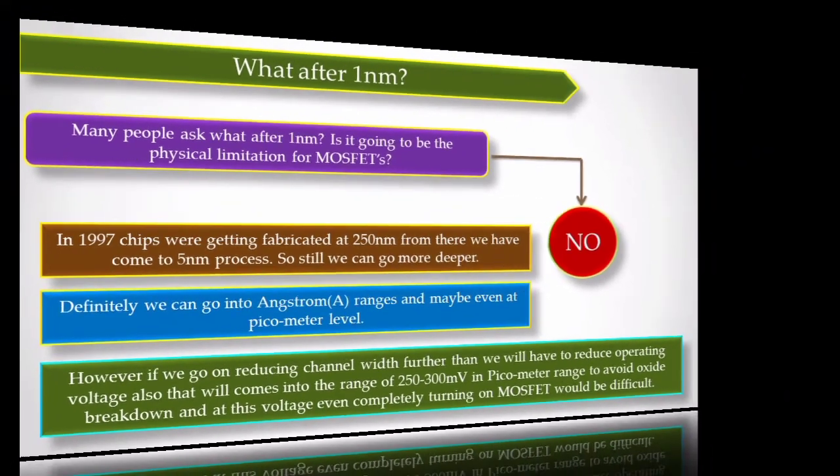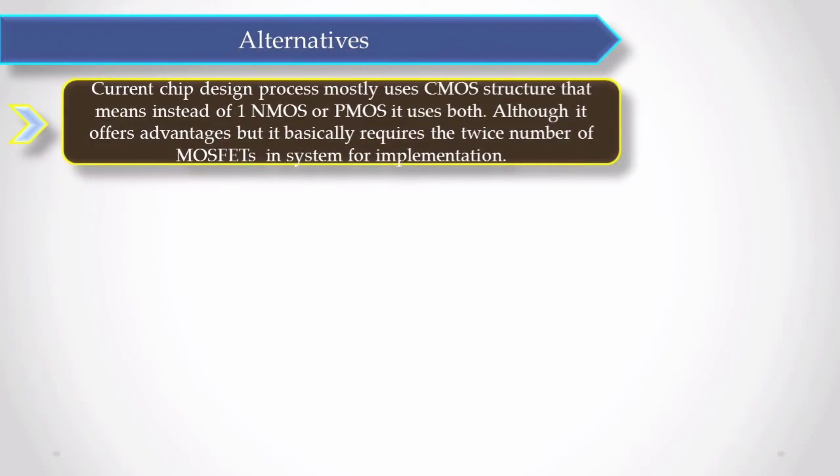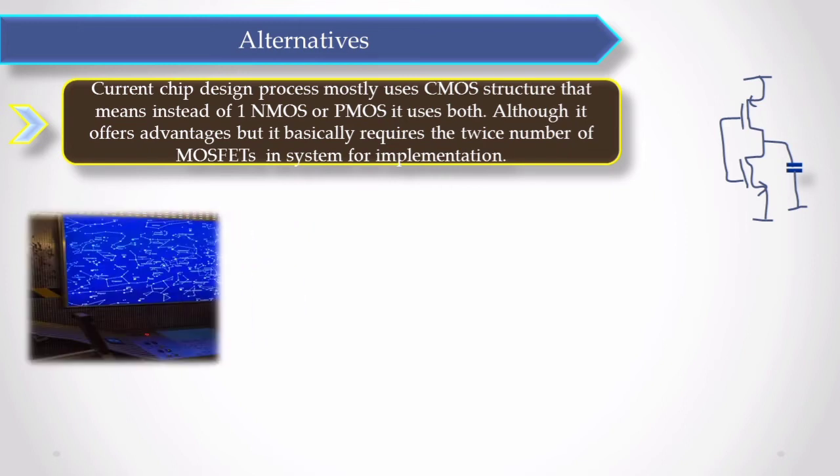The second answer could be like in current chip design process, we use CMOS technique as a design. But in future, we could have some different technique which uses only one MOS to implement the logic. So for the same logic, instead of having double transistors, we will have the half number of transistors and that will take less area and performance will be good.